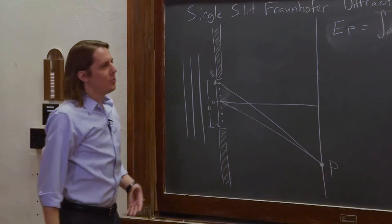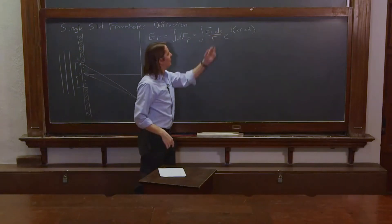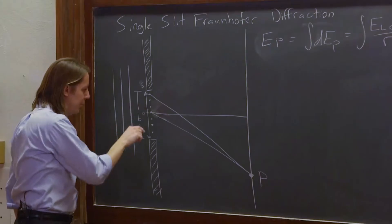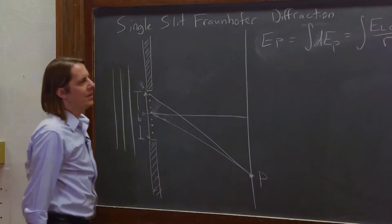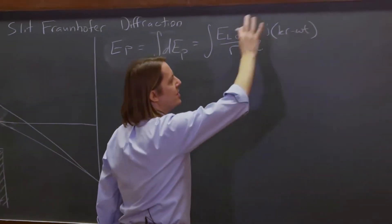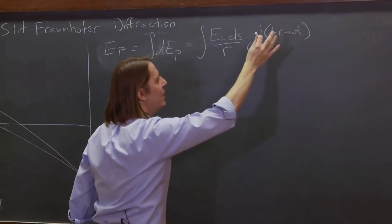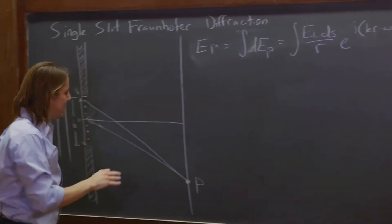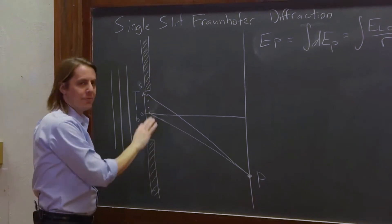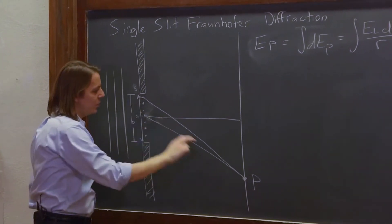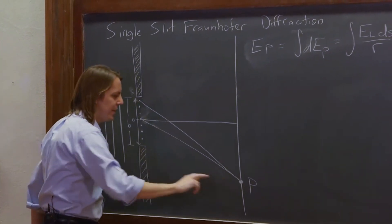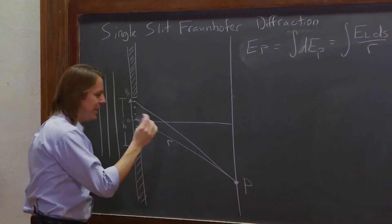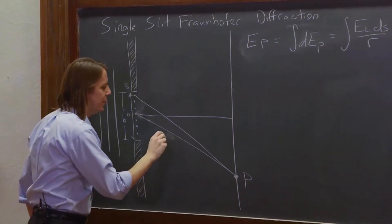When you're integrating with respect to S — because we have a dS there — you're moving up and down in the slit, considering all the different little Huygens' wavelets, and you have to think about what changes as you move around in S. The only thing that's going to change is R, because R is different for each one of these wavelets; each one takes a slightly different distance to get to P. We can think of the center one as the main one, and we'll call that R.